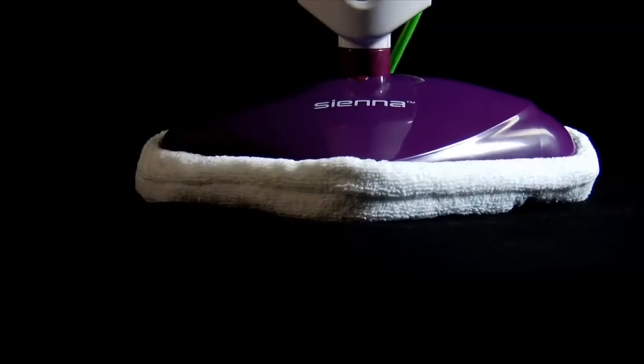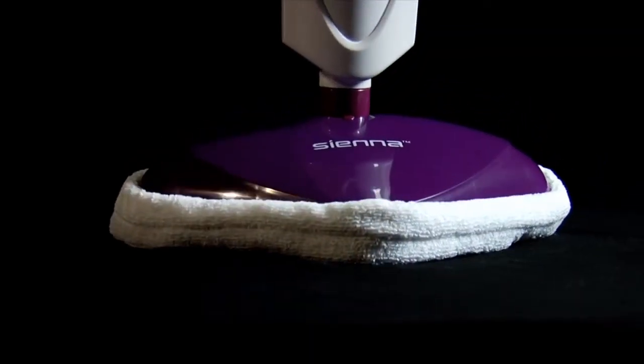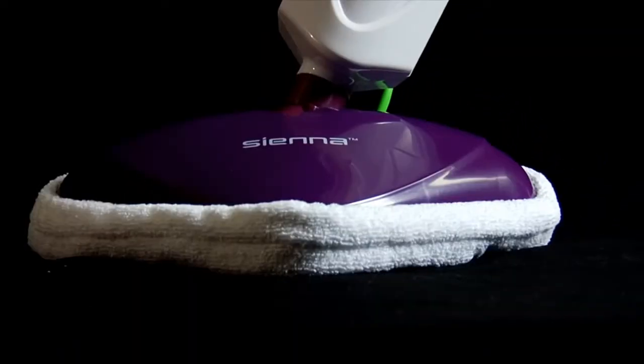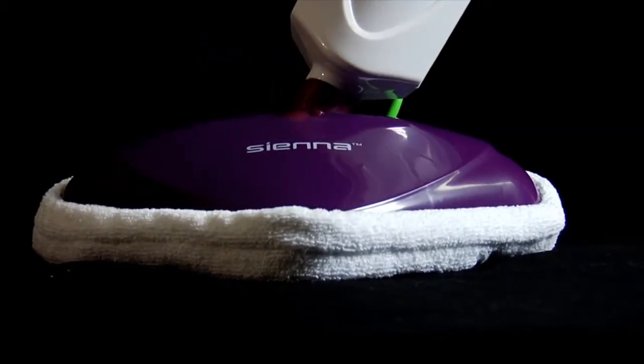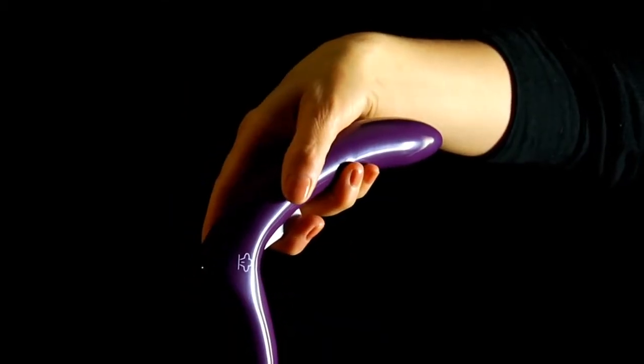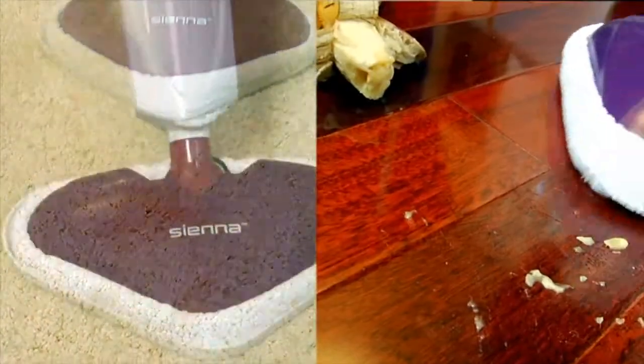The Siena Vortex Steam Mop was born to clean. Engineered with 1500 watts of power, a 180-degree triangular swivel steam head for tight corners, a large water tank with built-in filters, and easy grip handle. The Vortex Steam Mop is ideal for cleaning hard floor and soft carpet surfaces.